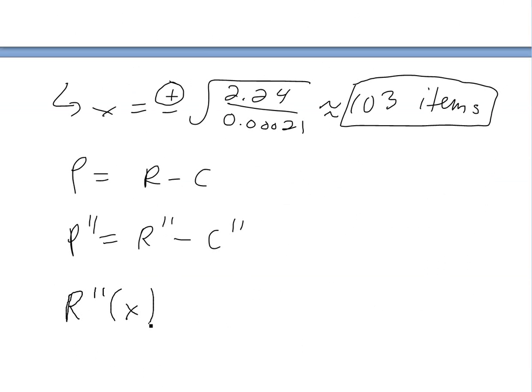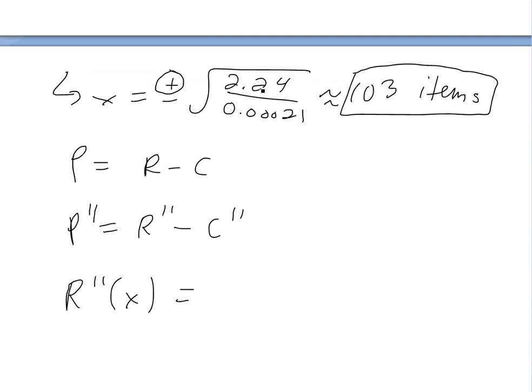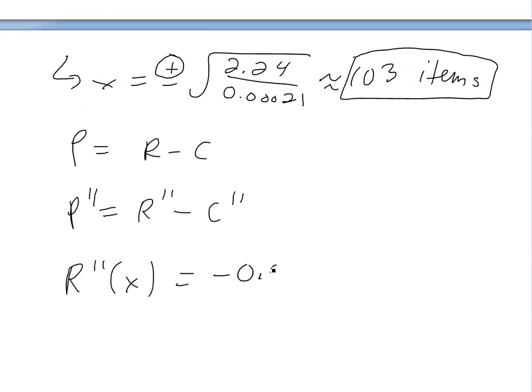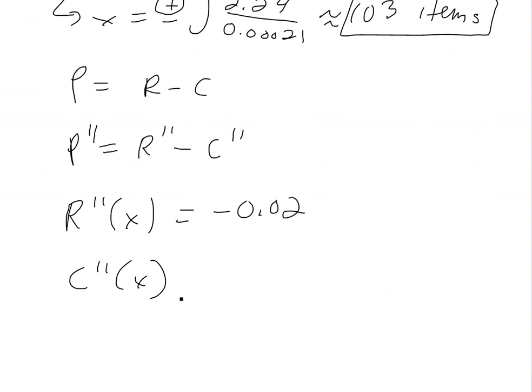In this case, when we look at the second derivatives of both of these, the second derivative of revenue is just going to be equal to negative 0.02. And then the second derivative of cost is going to be negative 0.02 plus 0.0042X.